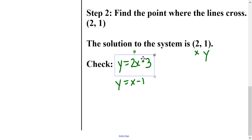So I'm going to plug in 2 for x and 1 for y. So I would get 1 = 2 times 2 minus 3. And I'm going to see if that works. So 2 times 2 is 4. Minus 3 would equal 1. So that works. Then for the second equation, I would have 1 = 2 - 1, which is also true. So this is the solution for both equations.